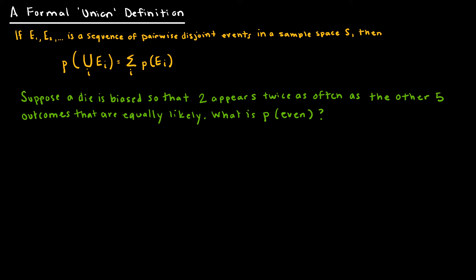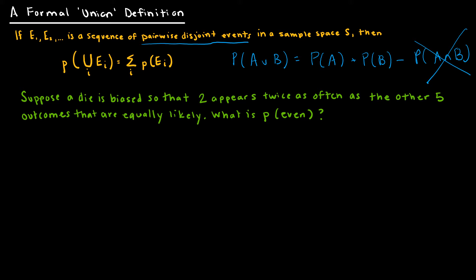Here's another union definition. When looking for the probability of the union of two events, we take the probability of A plus the probability of B and subtract any overlap. If you have pairwise disjoint events, there is no overlap, so we don't have to subtract. The union of a sequence of pairwise disjoint events is just the sum of those individual event probabilities — same formula, different notation.